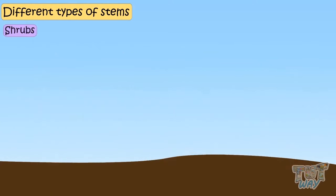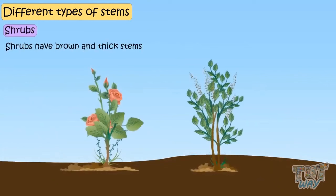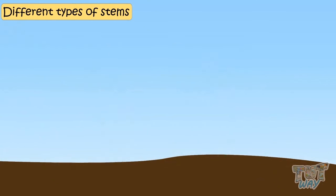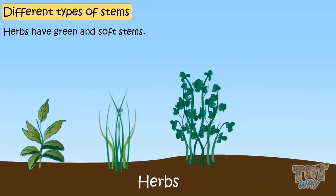Shrubs have brown and thick stems, but not as thick as trees. Herbs have green and soft stems.